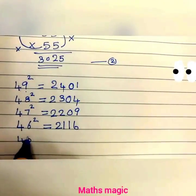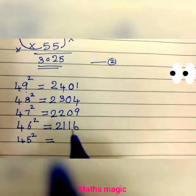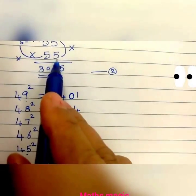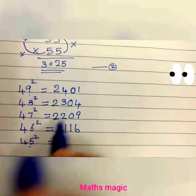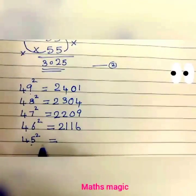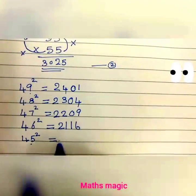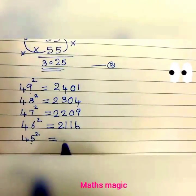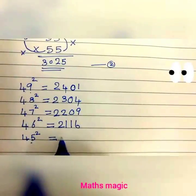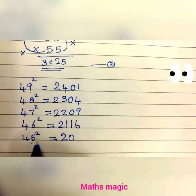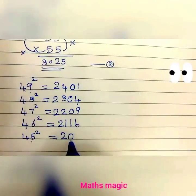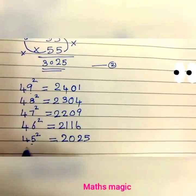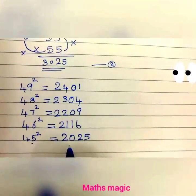Now let us take 45 squared. 45 is 50 minus 5, so we subtract 5 from 25: 25 minus 5 is 20. We have subtracted 5, so take the square of 5: 5 times 5 is 25. So 45 squared is 2025.